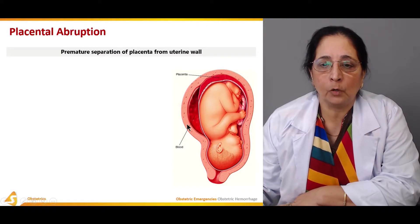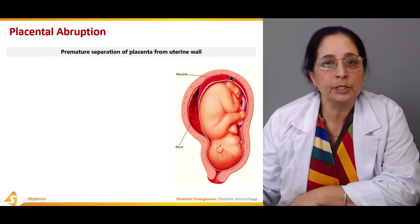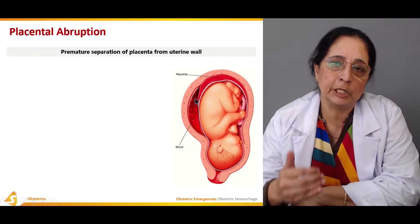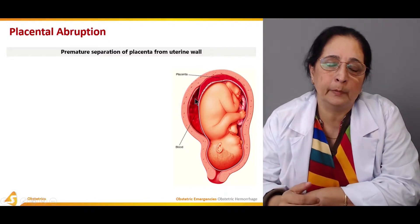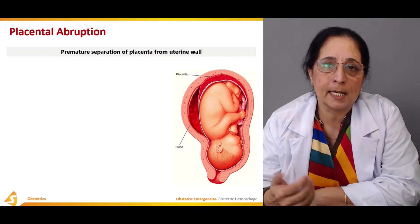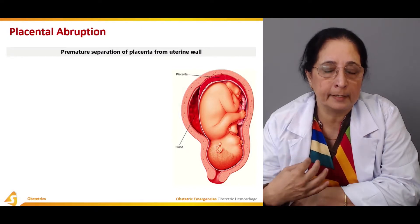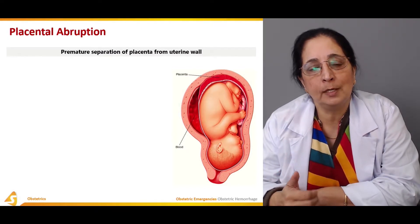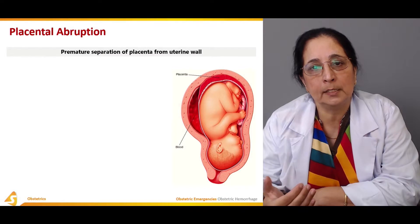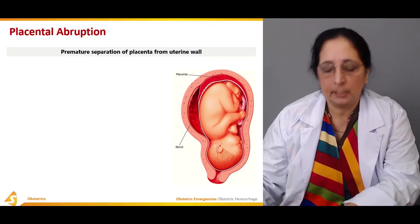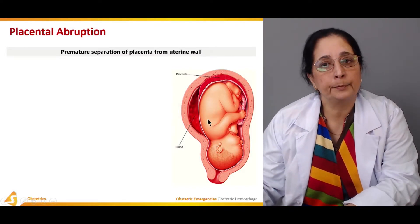The placenta is normally attached to the uterine wall, and in the third stage of labor after the baby is delivered, then the placenta is delivered. But when it is prematurely separated from the wall of the uterus, it is called abruptio placentae.